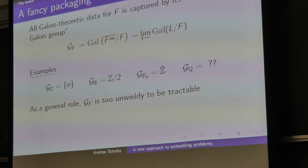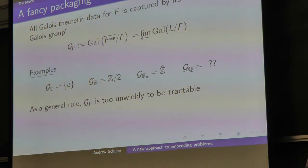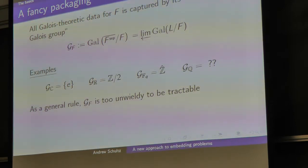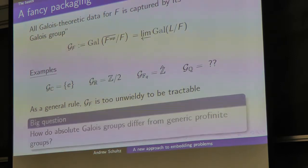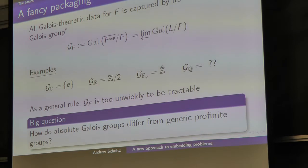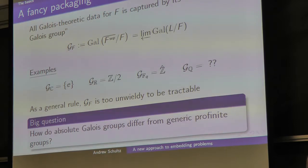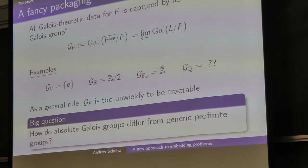When I said impossible, I just mean very, very difficult — certainly the subject of a lot of investigation. There are things people know about this object, but if you really want to know exactly what it is right now, we don't have a satisfactory answer. It's a very difficult, very big deal question. So one question to ask: if you can't know exactly what an absolute Galois group is, in what ways are absolute Galois groups different from generic profinite groups?